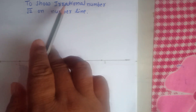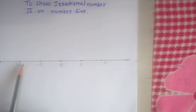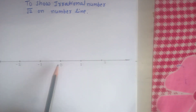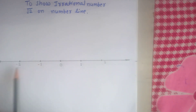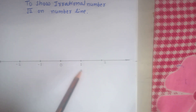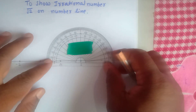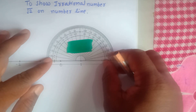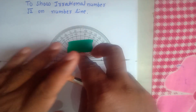To show irrational number root 2 on a number line, draw one number line. The distance between 0 to 1, 1 to 2, 0 to minus 1, and minus 1 to minus 2 is the same. This distance is called a unit distance. In order to show root 2 on the number line, draw a line perpendicular from the unit distance point.